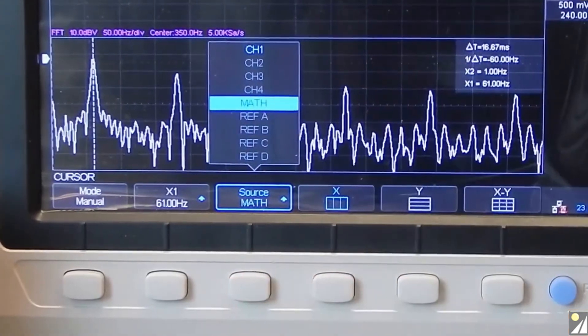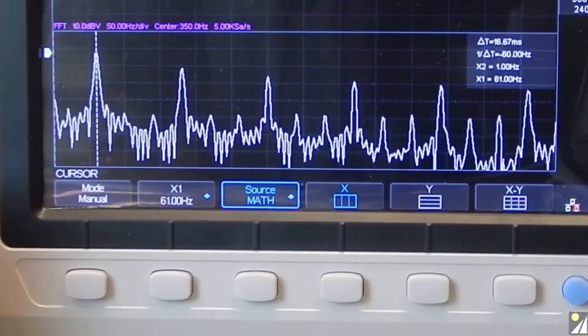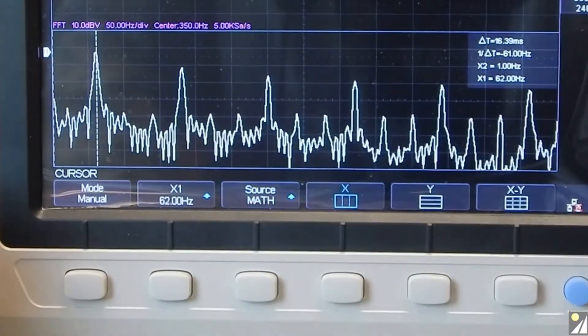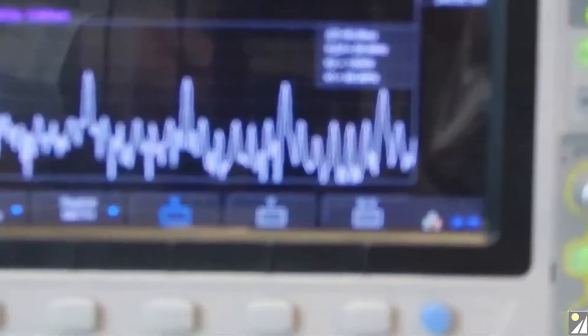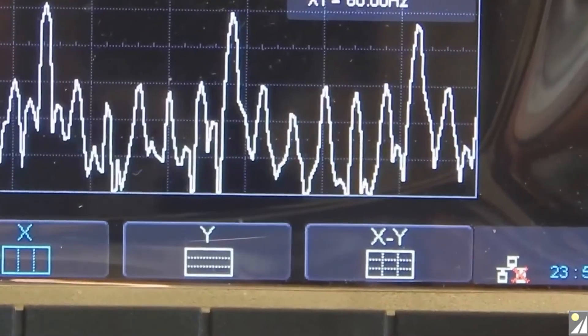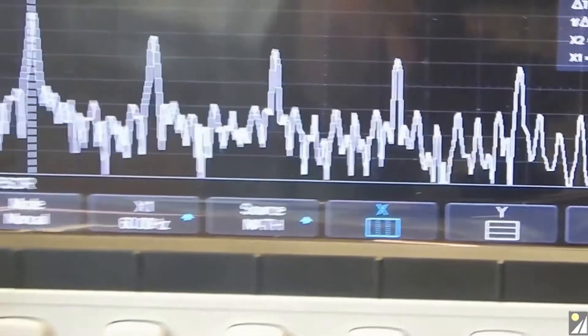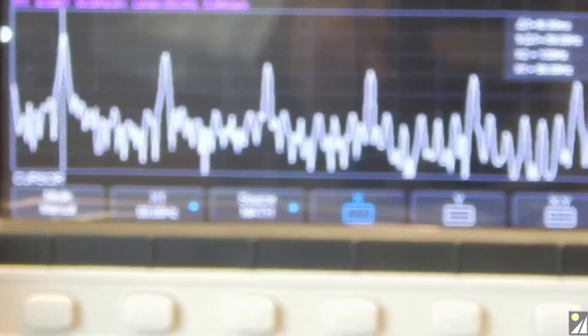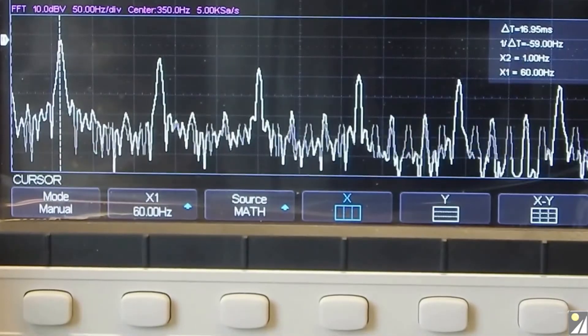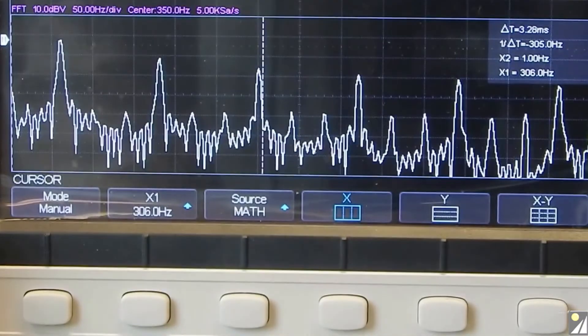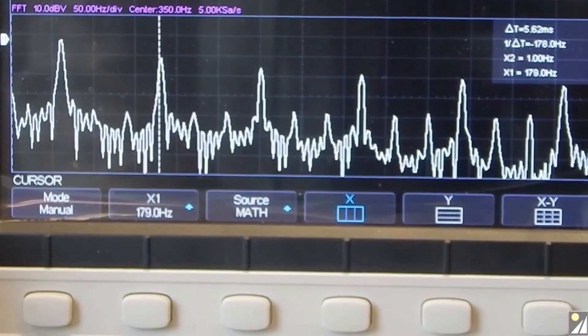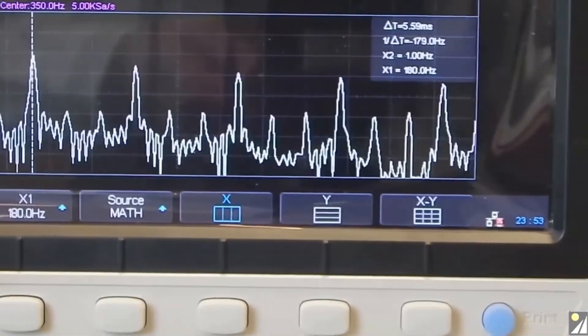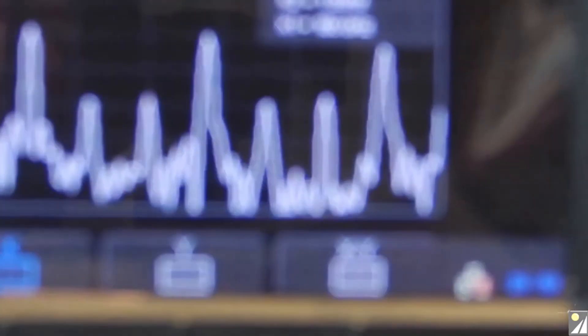Let's turn on the cursor just to verify that, and let's change this over to math. Okay, and sure enough, as we move the cursor we can see it's right smack on 60 hertz. And if we look at our first harmonic, that appears, that should be the third harmonic. You have 60 hertz, that would be 180, 180 hertz, which is what we get there on the screen. So it's operating just as we expected.